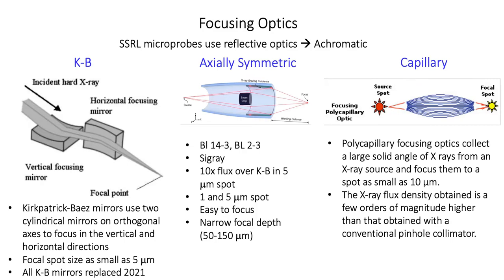At beamlines 7-2 and 6-2, we offer capillary optics. Polycapillary focusing optics collect a large solid angle of x-rays from an x-ray source and focus them to a small spot size; currently our spot size ranges from 25 to 100 microns. At beamline 7-2, we also offer pinhole collimators, which obtain a lower flux but do not have a focal depth associated with them.